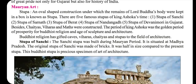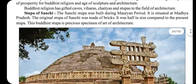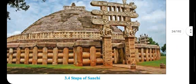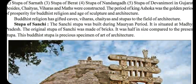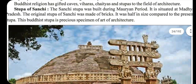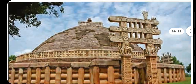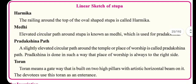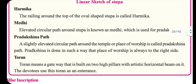The period of King Ashoka was the golden period of prosperity for the Buddhist religion. Buddhist religion has gifted us caves, chaityas and stupas in the field of architecture. The stupa of Sanchi, shown here, was built during the Mauryan period and is situated in Madhya Pradesh. The original stupa was made of bricks and was half the size of the present stupa. A linear sketch of the stupa is also provided.